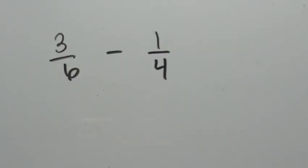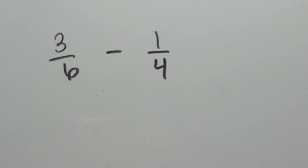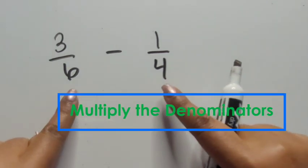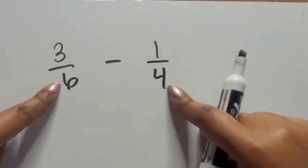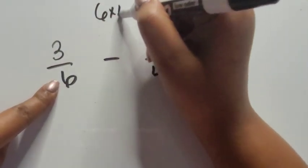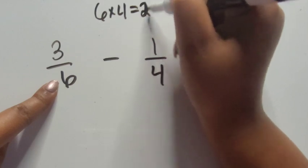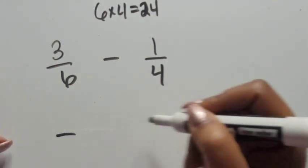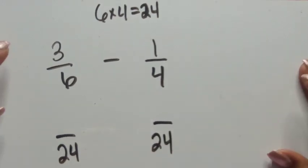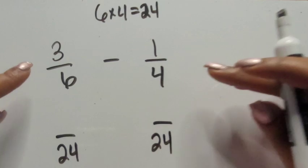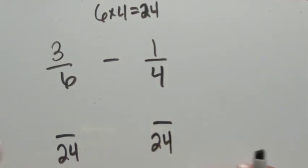For our second way to subtract fractions with unlike denominators, we're going to use the same two examples. For our first example, three-sixths minus one-fourth, this time we're going to be multiplying our denominators to find a common denominator. Six times four equals twenty-four, so that can be our common denominator. In our first example we used twelve, but they also have twenty-four in common.